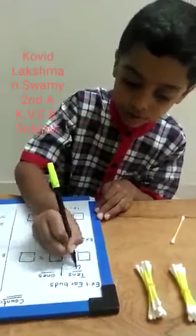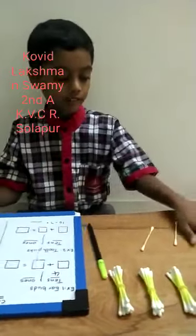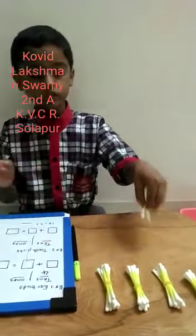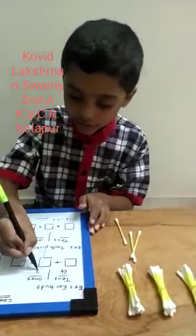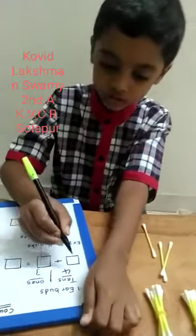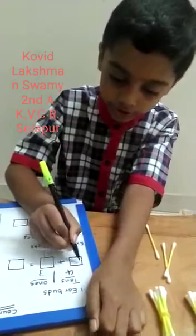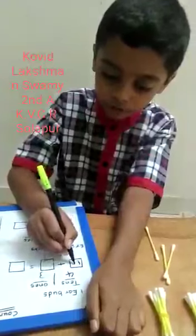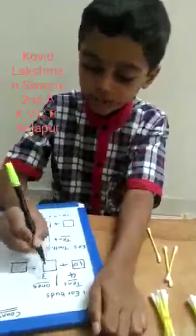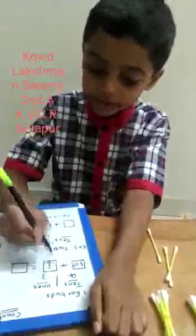Four tens. I am having three loose earbuds. Three ones. Four tens means forty. Forty plus three ones equals forty-three.